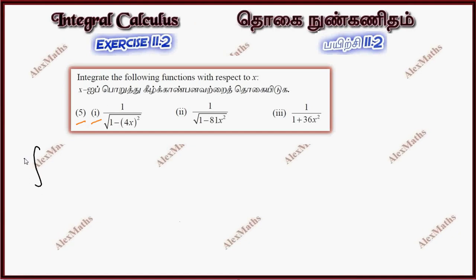We integrate 1 by root 1 minus 4x whole square dx.